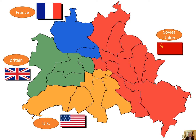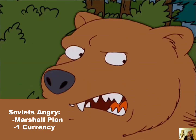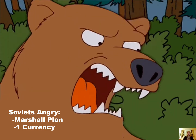They had to have new elections and create new political parties. So until that could happen, the Allied powers came into Berlin, which is the capital of Germany, and they divided Berlin, each occupying one part. You can see here on this map how East Berlin was occupied by the Soviet Union, while France, Britain, and the US occupied the western part of Berlin.